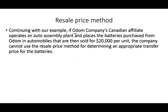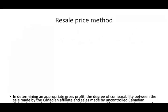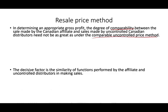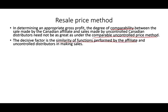Now, if O company's Canadian affiliate operates an automobile assembly plant and places the batteries purchased from O into automobiles that are sold for $20,000 per unit, the company cannot use the resale price method for determining an appropriate transfer price. Because now they're not selling the battery for $50 — the battery is a small section of a new product, which is the car itself. In determining an appropriate gross margin, the degree of comparability between the sale made by the Canadian affiliate and an uncontrolled Canadian distributor need not be as great as under the comparable uncontrolled price method. The decisive factor is similarity of functions performed by the affiliate.